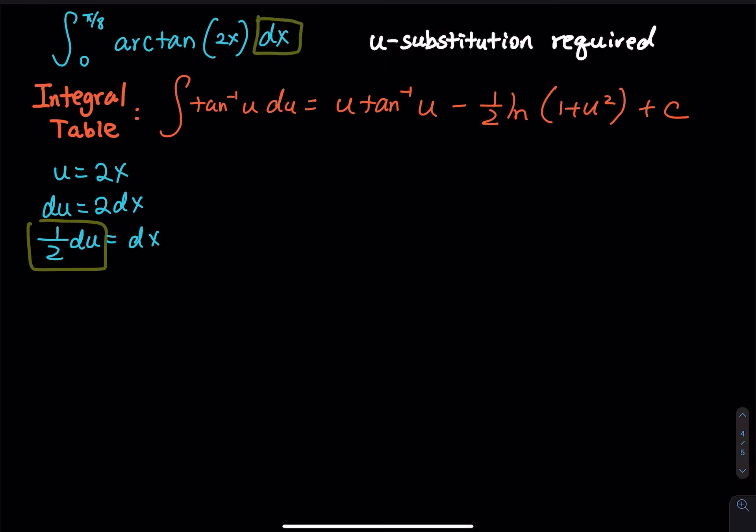And then, the next thing that we are going to do is, in the given integral, we have x equals to π over 8, right? We have x equals to π over 8, and we have x equals to 0. We want to put that in terms of u. So we have u of π over 8, that is equal to 2 times π over 8, which is π over 4. And then u of 0, that is 2 times 0, that is equal to 0. So now, let's rewrite the integral.